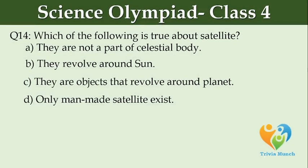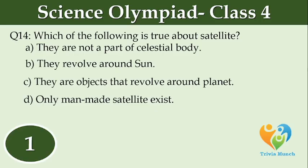Which of the following is true about satellites? Option A: They are not a part of the celestial body. Option B: They revolve around the sun. Option C: They are objects that revolve around the planet. Option D: Only man-made satellites exist.